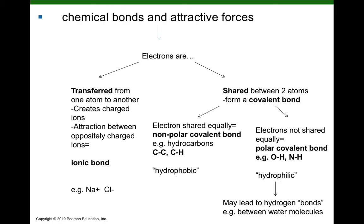Atoms involved in polar covalent bonds can participate in another attractive force called a hydrogen bond. Hydrogen bonds are formed between an atom with a partial positive charge and a different atom with a partial negative charge. It's the weakest of the attractive forces we'll be talking about, but if there are hundreds and thousands of hydrogen bonds, they can play a really important role in stabilizing functional conformation.